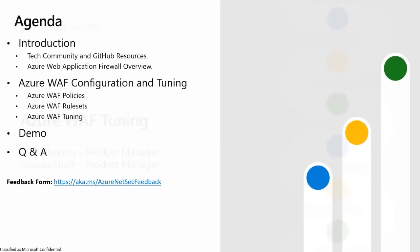When we look at the agenda here, we'll start with the introduction, which will cover some of the resources we have, like the tech community and GitHub resources, then we'll talk about Azure Web Application Firewall overview. We'll jump into the WAF configuration side of things, which will cover WAF policies, rulesets, and how to tune your Azure WAF. Finally, we'll cover a couple of demo scenarios and then question and answers.